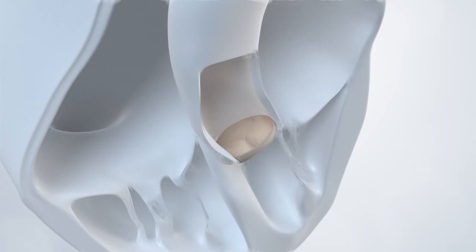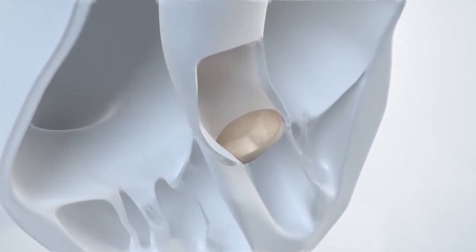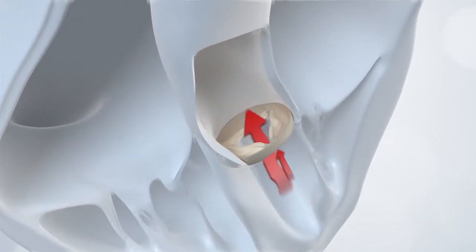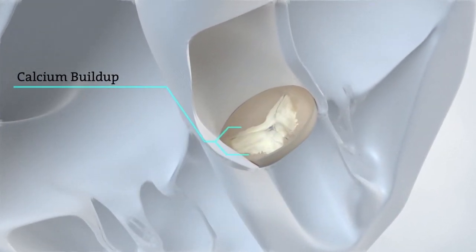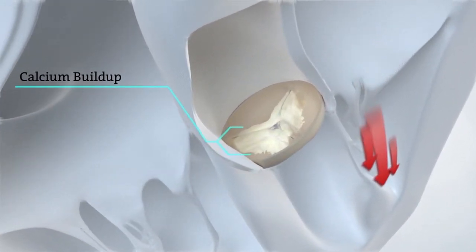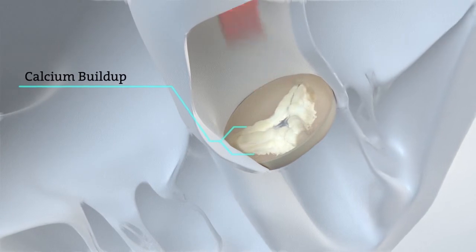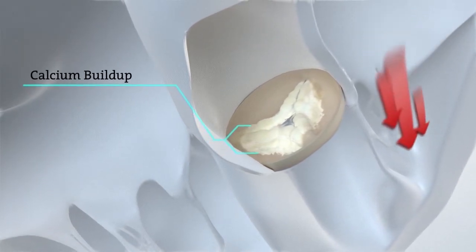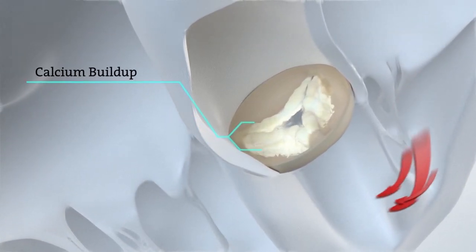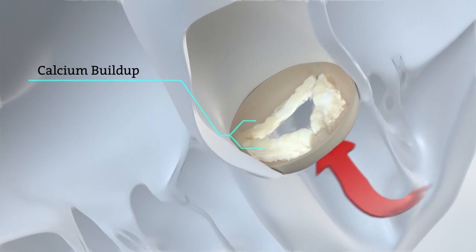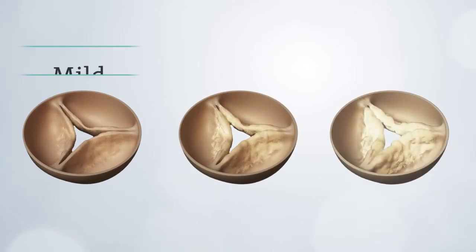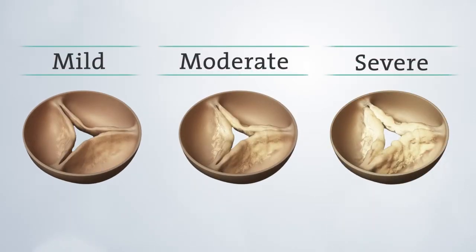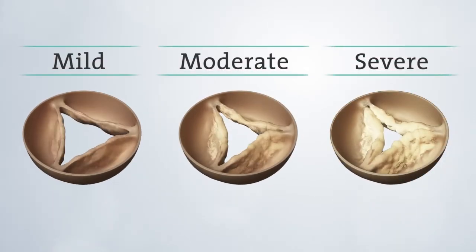It's important to know that if you have aortic stenosis, your aortic valve narrows due to calcium buildup. This prevents the valve from fully opening, which blocks blood flow from your heart to the rest of the body. As a result of the reduced blood flow, the body does not get the oxygen it needs, which can lead to symptoms. Aortic stenosis is a progressive disease, which means it gets worse over time.